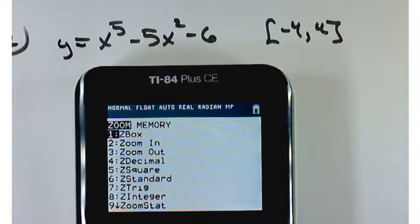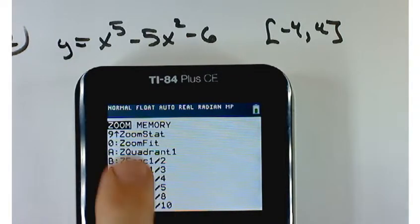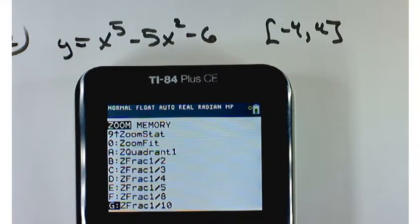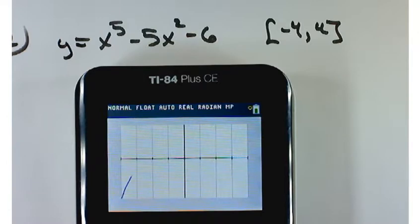So if you hit zoom and then zero, that's really zoom fit. So zoom and then zero, the graph will adjust itself so that the y-coordinates are created to fit our graph. And we get something that looks like this.